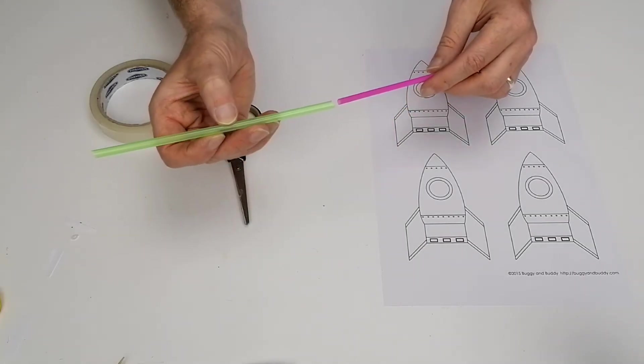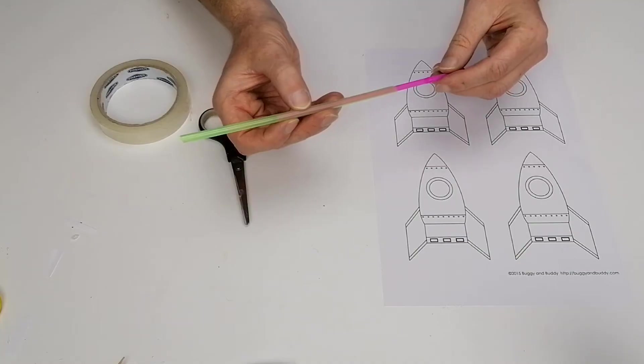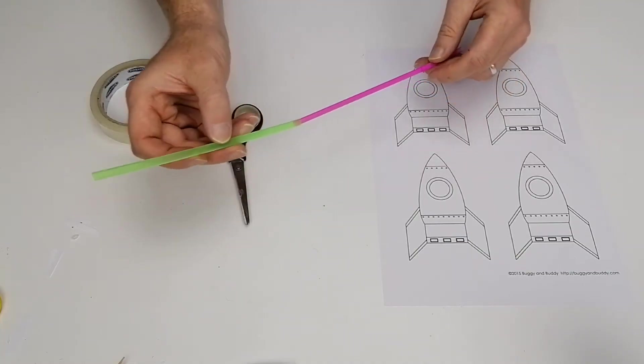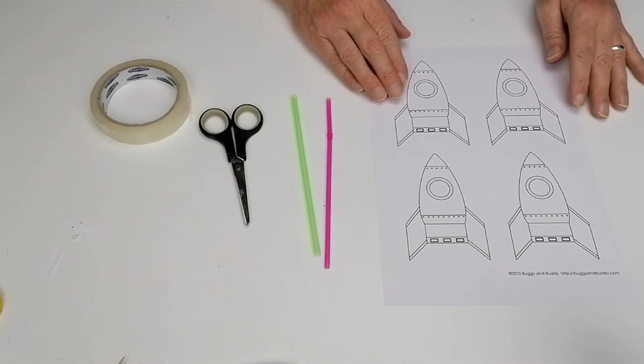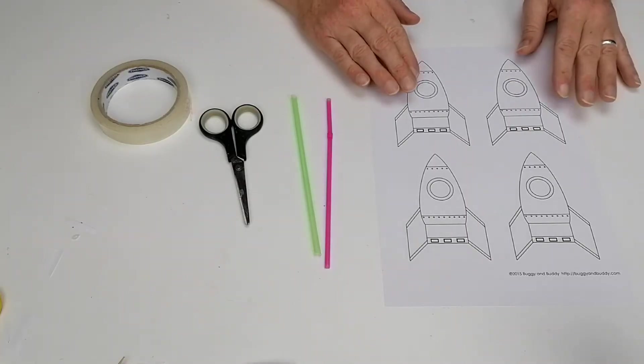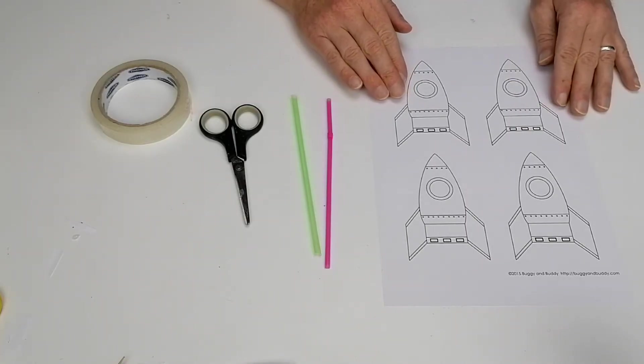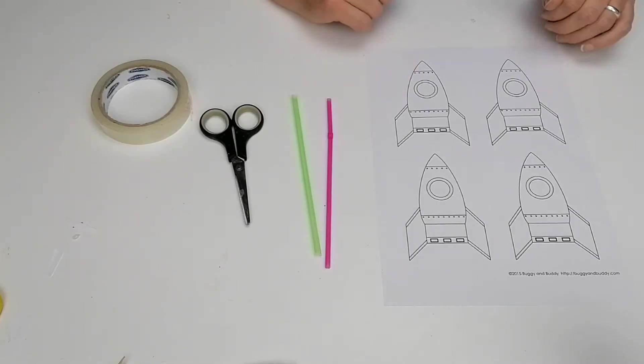One straw is going to have to be a little bit wider than the other one because they have to fit into each other. And then you're going to need the rocket design template. To get a printout of this, I've left a link in the description of the video.